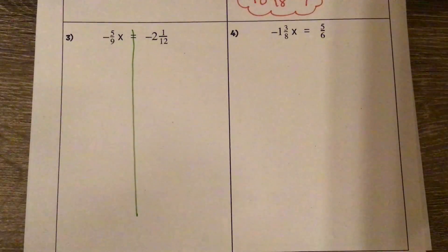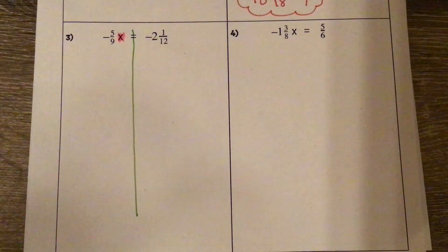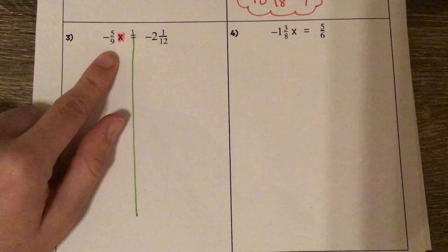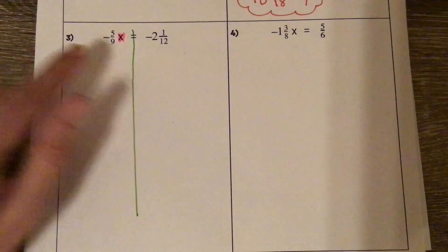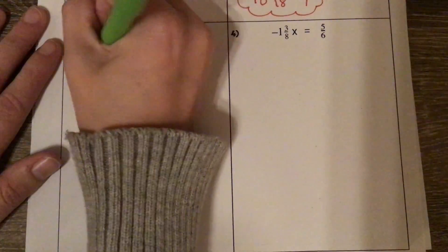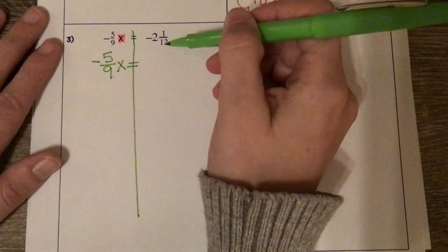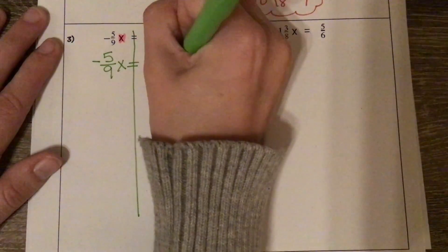Drawing our line down the equal sign and highlighting our variable. When we look at this, it's being multiplied. When we multiply fractions, we need to divide. And when we're multiplying and dividing fractions, we need improper fractions. So I'm going to immediately rewrite with improper fractions. We have negative 5 ninths x equals — 2 times 12 is 24, plus 1 is 25 — so negative 25 over 12.